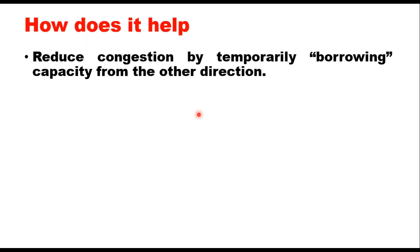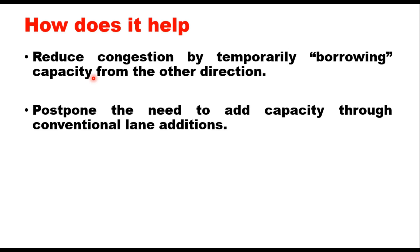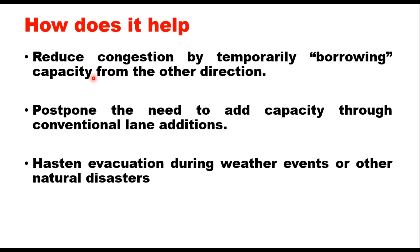When you need more capacity in a particular direction of travel, you borrow a lane from the opposite direction. This borrowing of the lane reduces congestion by enhancing capacity. It also postpones the need to add capacity through conventional lane additions and can hasten evacuation during weather events or other natural disasters.